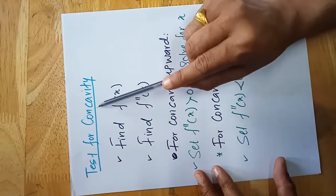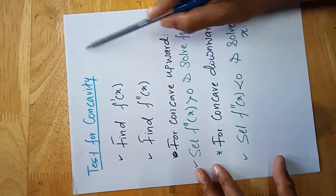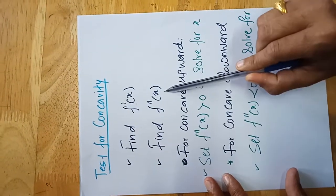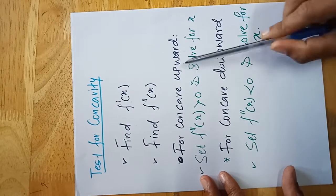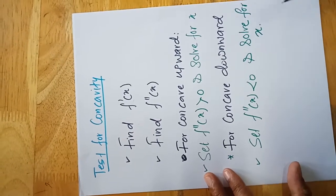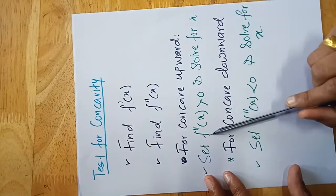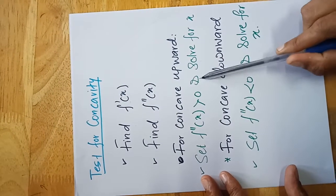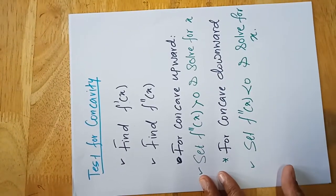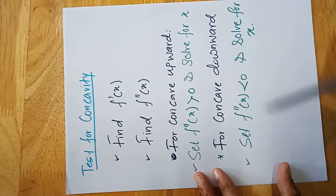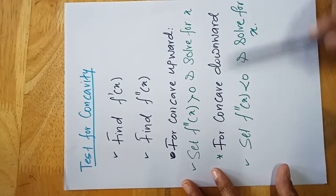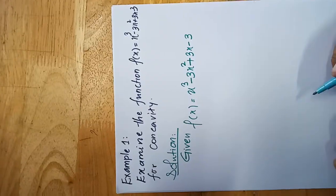Here is the test for concavity — also called the steps for finding concavity. Step one: find f'(x), the first derivative. Step two: find f''(x), the second derivative. For concave upward, set f''(x) greater than zero and solve for x. For concave downward, set f''(x) less than zero and solve for x. We will apply these steps while solving the problems.